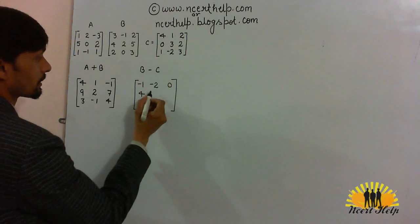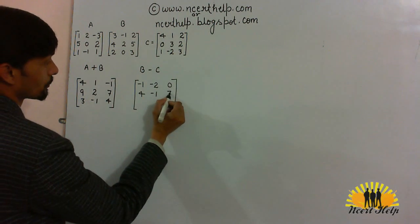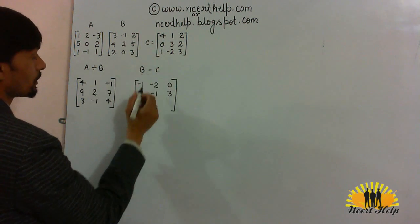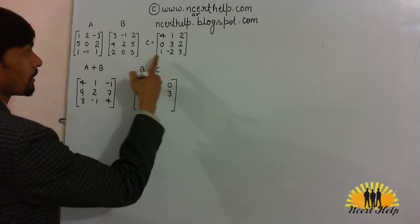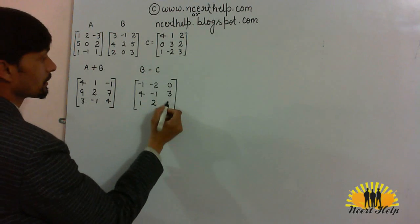4 minus 0, 4. 2 minus 3, minus 1. 5 minus 2, 3. 2 minus 1, 1. 0 minus minus 2, that will be 2. 3 minus 3, 0.